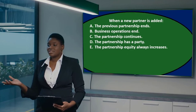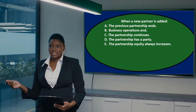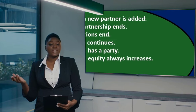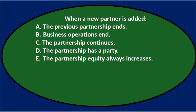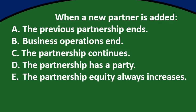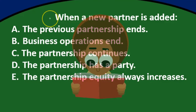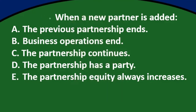In this presentation we will take a look at multiple choice questions related to partnerships. First question: when a partner is added, A) the previous partnership ends, B) business operations end, C) the partnership continues, D) the partnership has a party, E) the partnership equity always increases. Let's go through this and use the process of elimination.